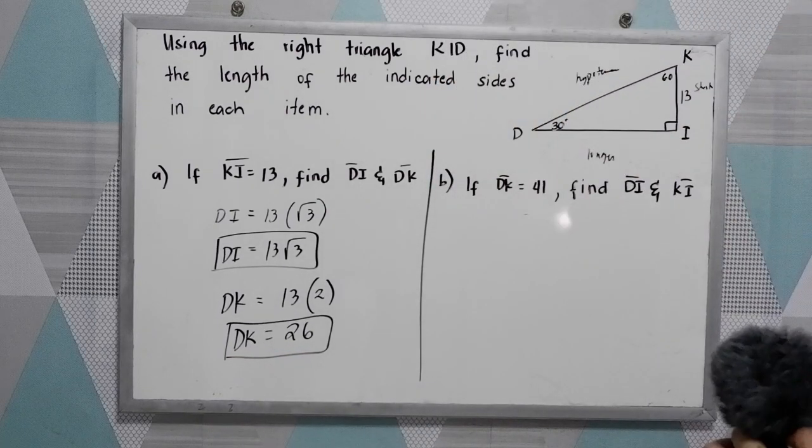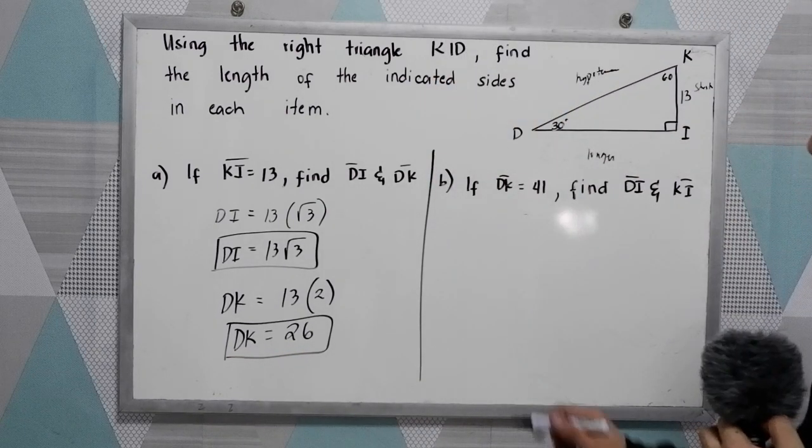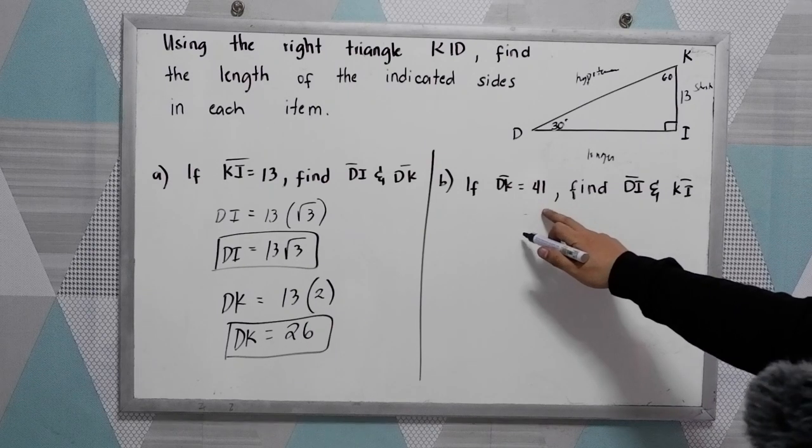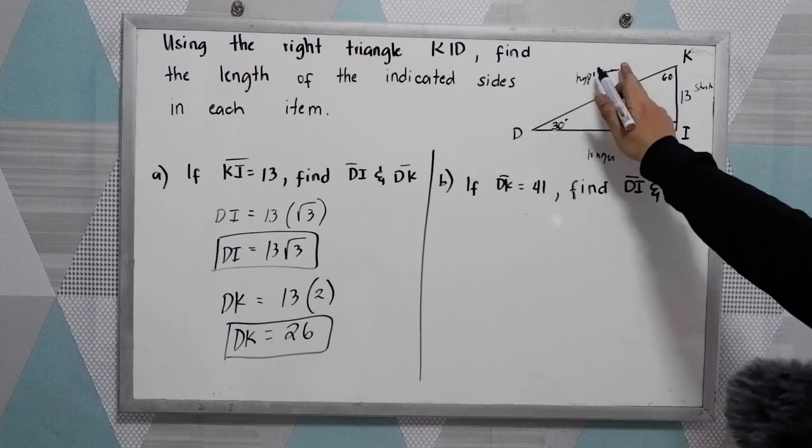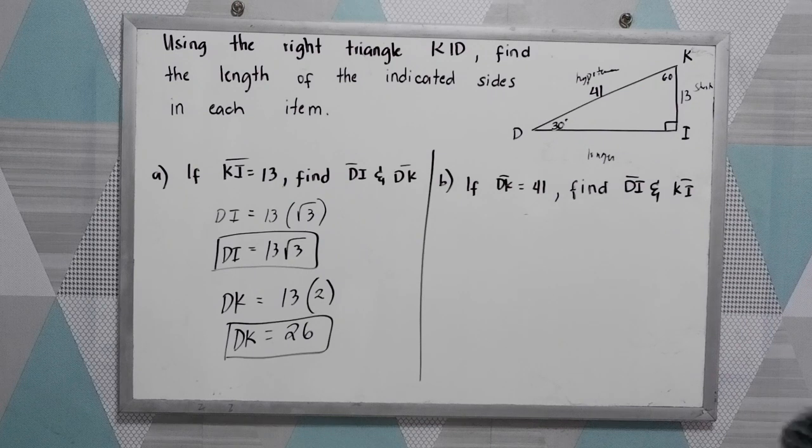Next, letter B. If DK is equal to 41. Now this time, the given is the hypotenuse. Find DI and KI.